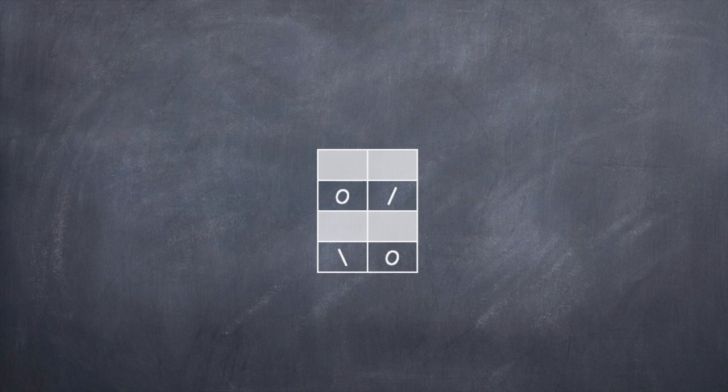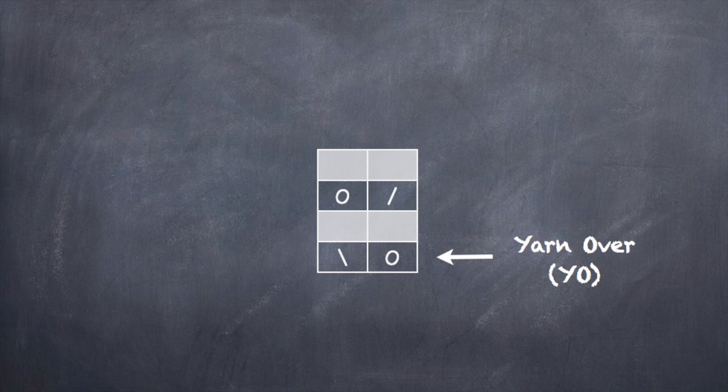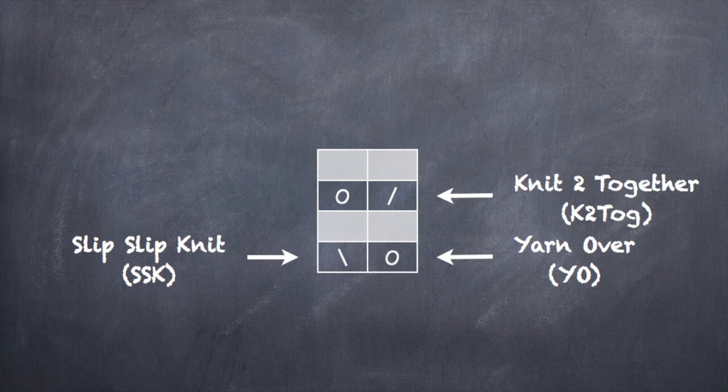Now if you're not familiar with chart symbols, let's do a quick review. This is a yarn over. This is a slip slip knit. This here is a knit two together. And these white stitches are purl stitches.